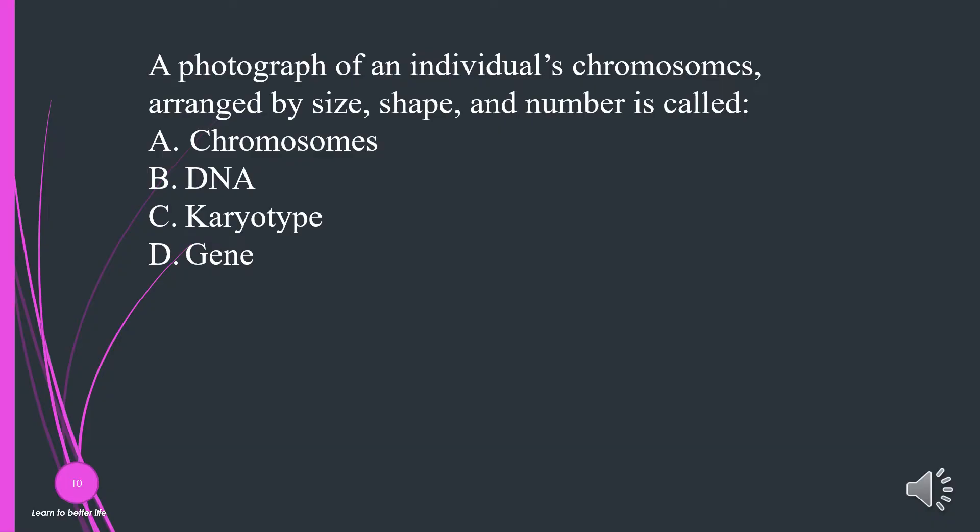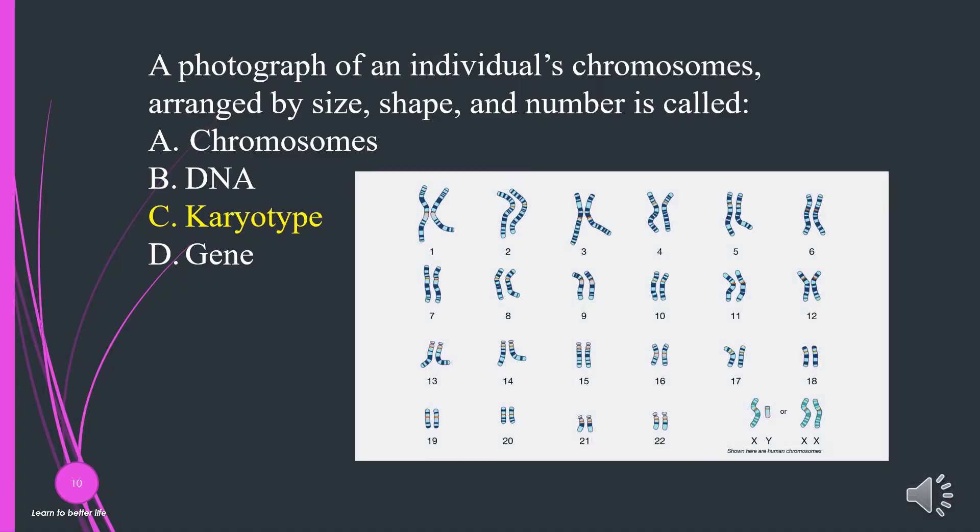A photograph of an individual's chromosomes arranged by size, shape, and number is called? Chromosomes, DNA, karyotype, or gene. The answer is C, karyotype.